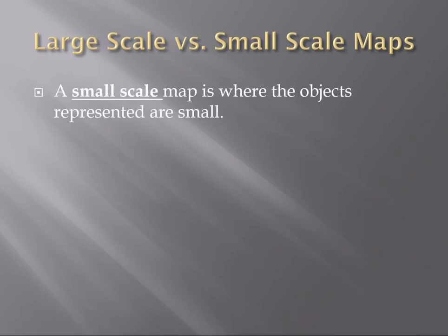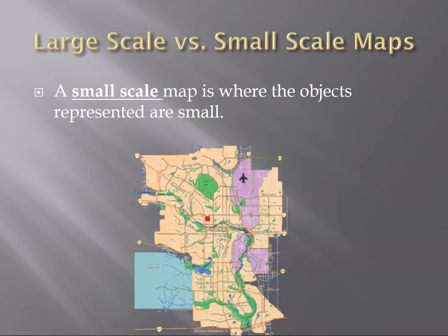A small scale map is where the objects are small. So look at all of Calgary. We have the whole Calgary. We're not going to be able to see a lot of objects because we're so zoomed out.